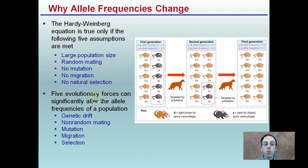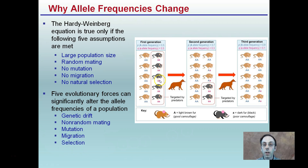There are five evolutionary forces that can significantly alter the allele frequency in a population: genetic drift, non-random mating, mutation, migration, and selection. These are assumed away in the Hardy-Weinberg equation, but this is a more accurate picture of what we see in a given population. For example, 50% of individuals are targeted by predators — the brown ones have good camouflage, the black ones have poor camouflage, and over certain generations we see selection for the brown phenotype.